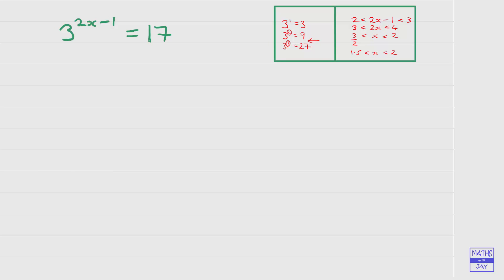So we can say that the index here, which is 2x minus 1, is equal to the log, and the base is this number here that we're raising to the power of something, so that's 3 log to base 3 of 17.